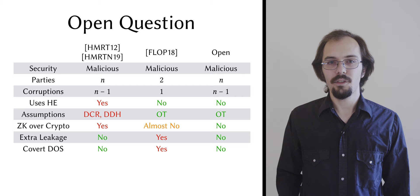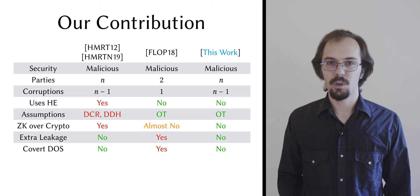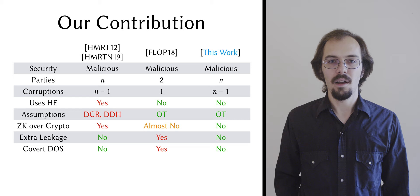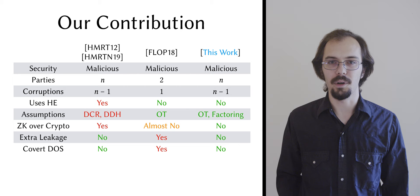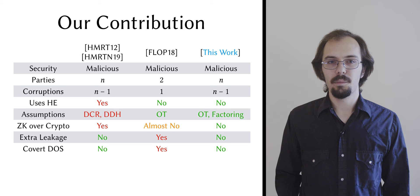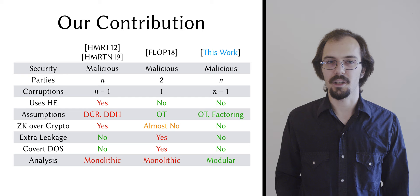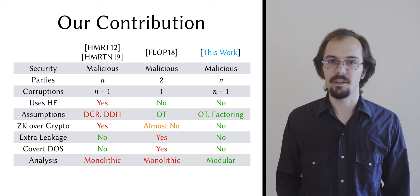We do require one specific assumption, which is the assumption that it's hard to factor bi-primes from our protocol's underlying sample distribution, but we view this as acceptable, since it's precisely the assumption required to use the protocol's output, and without it, the whole exercise is pointless. Beyond these things, we also provide a modular security analysis, whereas previous works have proven their protocols somewhat monolithically. We hope this will make it easy to interchange primitives and potentially prove new security guarantees in the future.